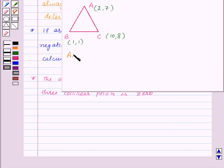The area of triangle ABC will be half times the determinant, and the determinant will be: 2, 1, 10; then 7, 1, 8; and 1, 1, 1.